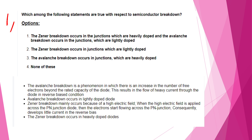Which statement is true? Let's look at Semiconductor Breakdown. Option A: The Zener breakdown occurs in junctions which are heavily doped, and the avalanche breakdown occurs in junctions which are lightly doped. Option B: The Zener breakdown occurs in junctions which are lightly doped. Option C: The avalanche breakdown occurs in junctions which are heavily doped. What is Zener breakdown? What is avalanche breakdown? These are different types of semiconductor breakdown.